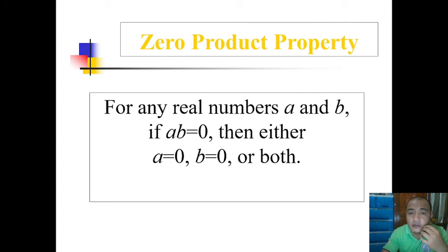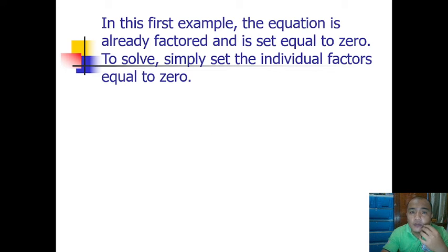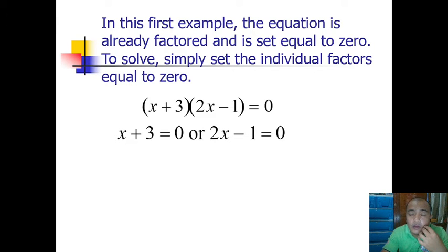In this first example, the equation is already factored and is set equal to 0. To solve, simply set the individual factors equal to 0. We have here (x+3)(2x-1)=0. Using the zero product property, we can equate x+3=0 or 2x-1=0, and thus by solving, x equals negative 3.